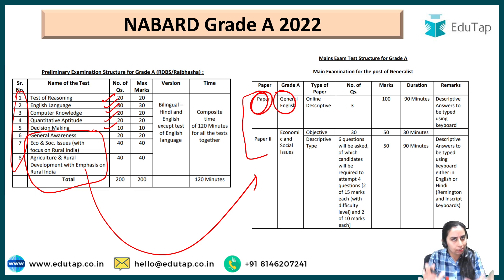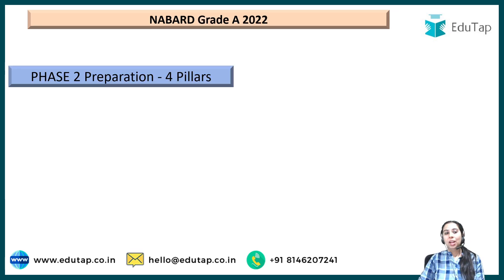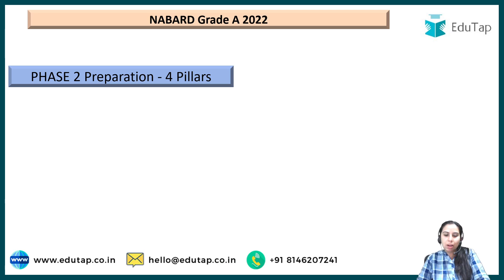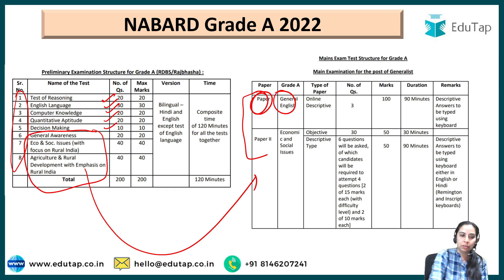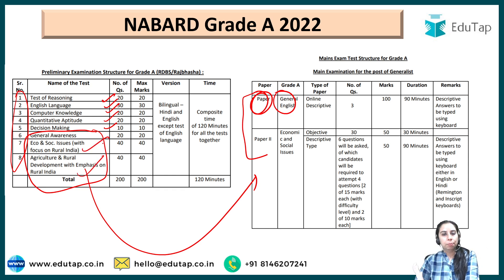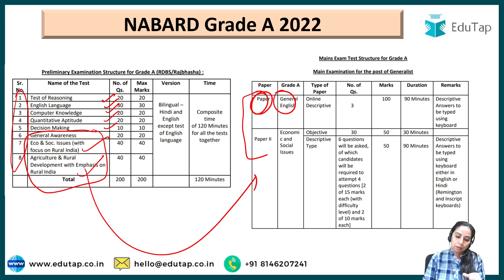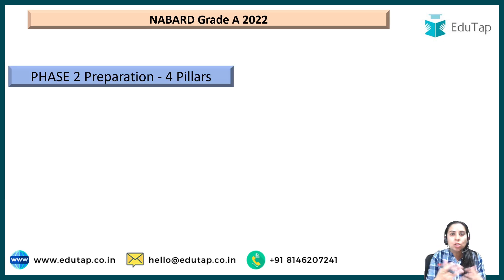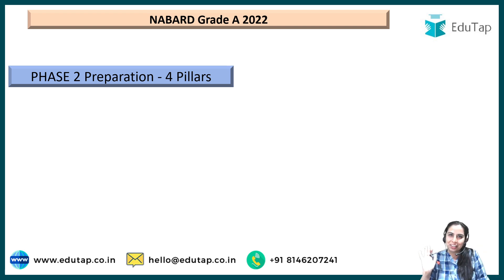After knowing the pattern, what I want to tell you is there are 4 pillars of Phase 2 preparation. You must know that there is no separate preparation for Phase 1 and Phase 2, for the simple reason that the same subjects are being repeated in Phase 2 as in Phase 1 with the same syllabus. So the pillars of Phase 2 preparation are also the pillars of your Phase 1 preparation.